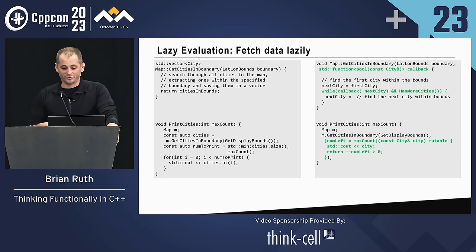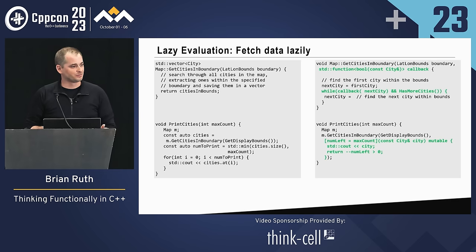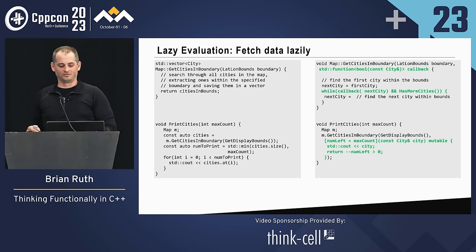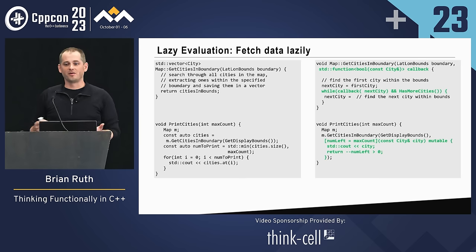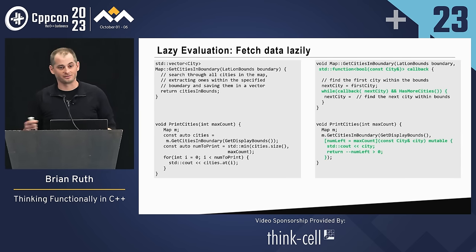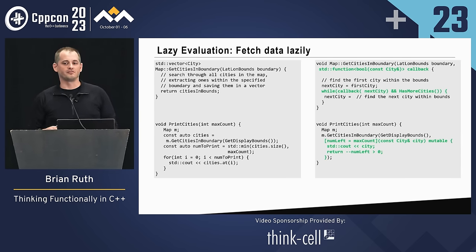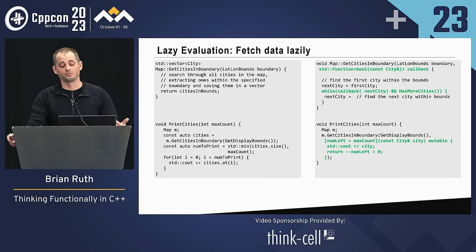This has a further advantage too — we may not only want to stop getting cities based on a number. We may want to find the first city that doesn't have a Starbucks, or any other condition you can't necessarily think of right now. With a little bit of extra effort, we've made this a more generic, more reusable function.